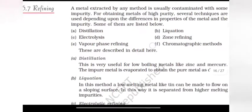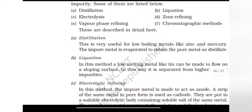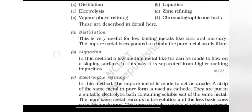Distillation. This is very useful for low boiling metals like zinc and mercury. The impure metal is evaporated to obtain the pure metal as distillate.